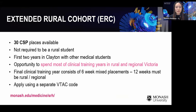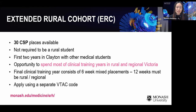There are a couple of different schemes for types of places available. The Extended Rural Cohort has a separate VTAC code and we have about 30 Commonwealth Supported Places available in the ERC each year. You are not required to be a rural student to be eligible. The first two years are spent at Clayton, but the following three clinical years are spent mostly in rural and regional Victoria. If you're interested in rural placements, you need to apply via a separate VTAC code.